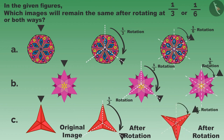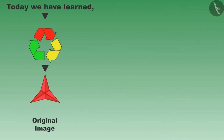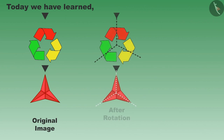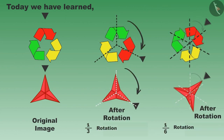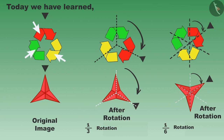In this video we learned that while rotating an image by one-third or one-sixth, you should focus on the color and the shape of different parts. It is not necessary that we will get the original shape after one-third or one-sixth rotation. Thank you.